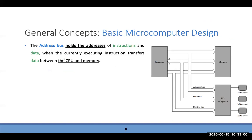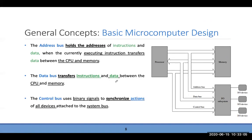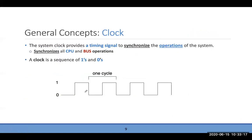The address bus, data bus, and control bus carry binary signals and synchronize read/write actions. Inside the microprocessor we have registers at the top, the ALU, the control unit, and the clock — all very important units.